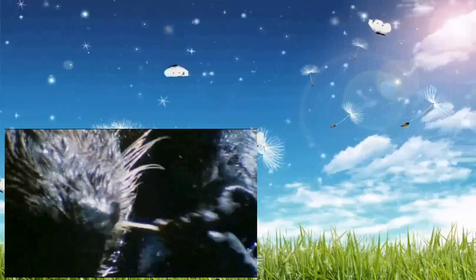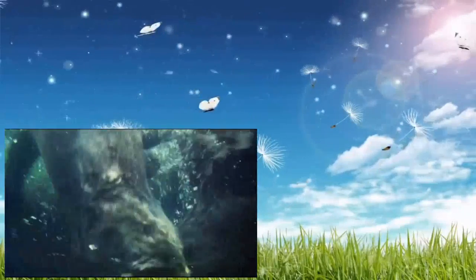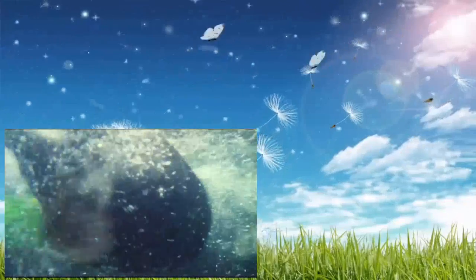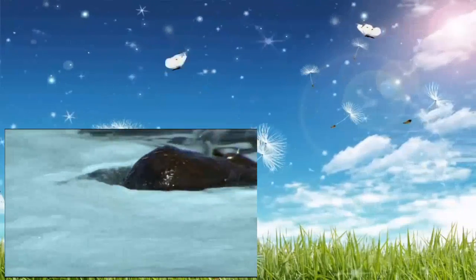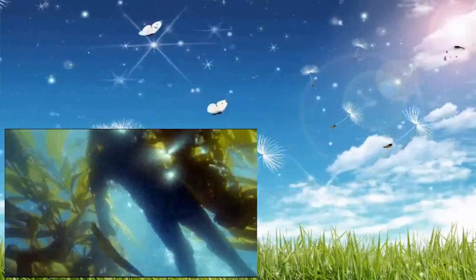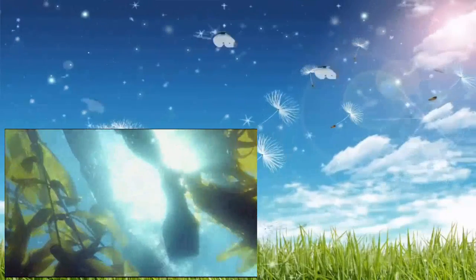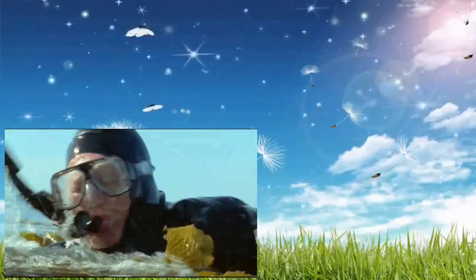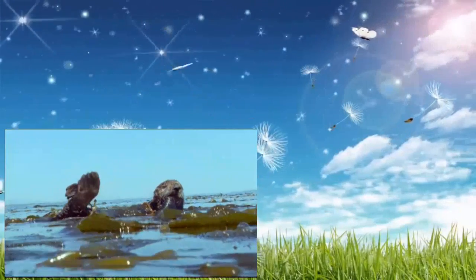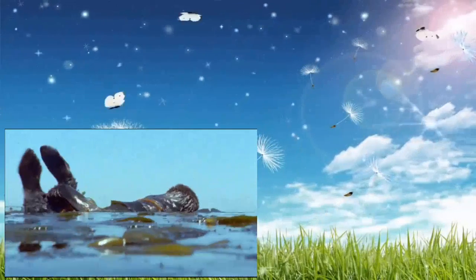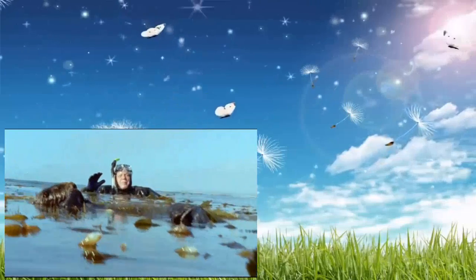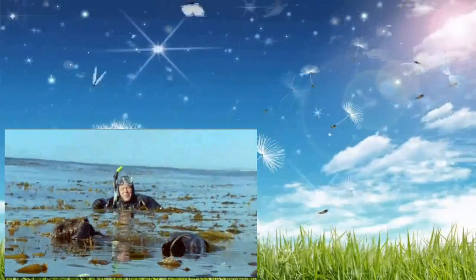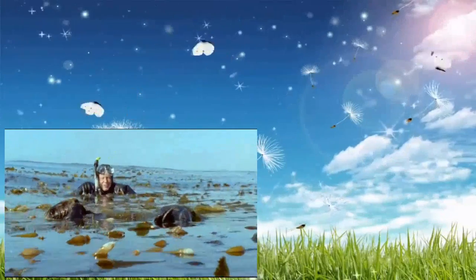River otters leave the water to mate, but these creatures are so at home at sea that they mate here, bringing a new meaning to the concept of synchronized swimming. They don't even go back to land to sleep, and how do they prevent themselves from being carried away by the current? Well, they wrap themselves up in the kelp, as this one has done.